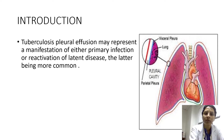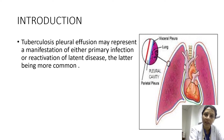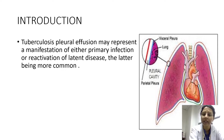Tuberculosis can affect any part of the body. It could be either a primary infection or a secondary infection due to reactivation of latent disease. In the case of Extrapulmonary Tuberculosis, the latter — that is, reactivation of latent disease — is much more common.